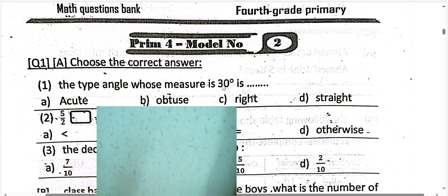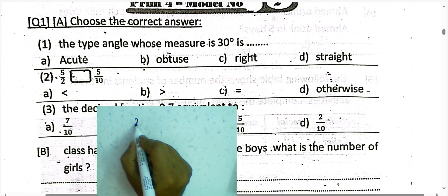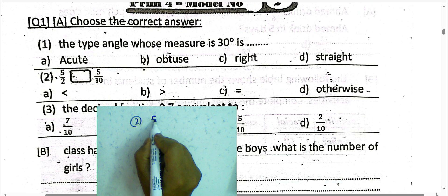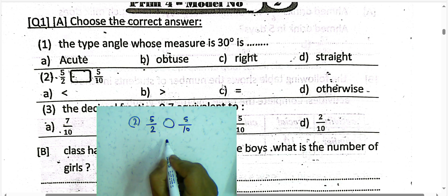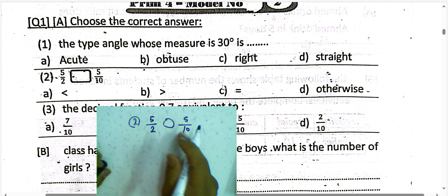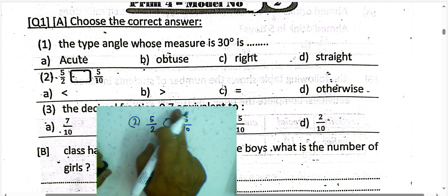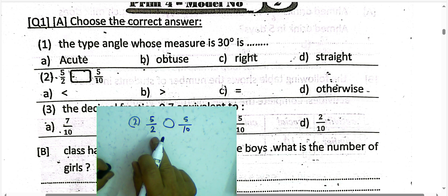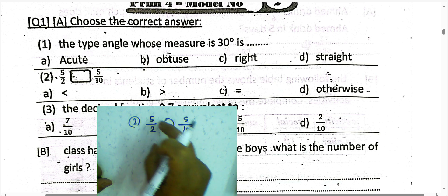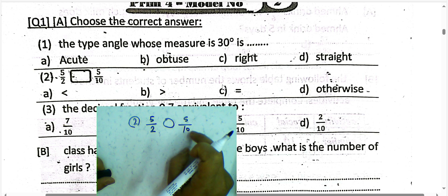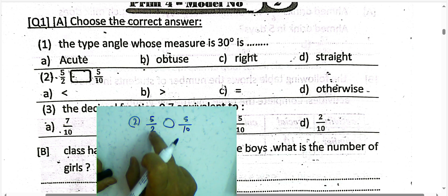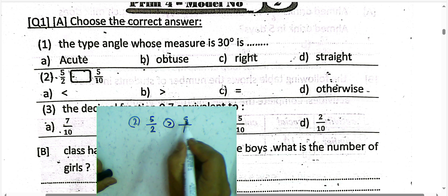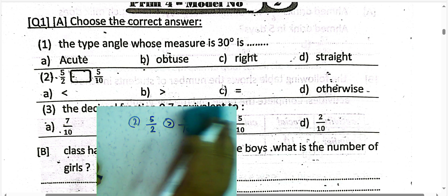Question number 2: which is greater — 5/2 or 5/10? We have the same numerator here. The smaller the denominator, the greater the value, so 5/2 is greater than 5/10. Choose this side.